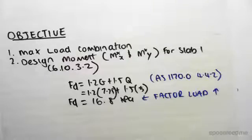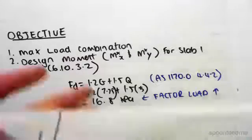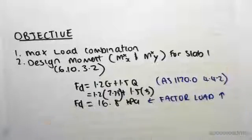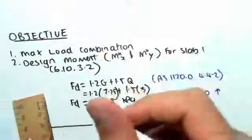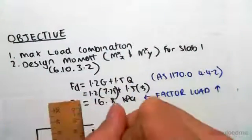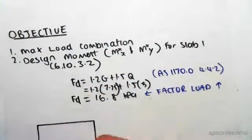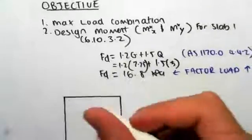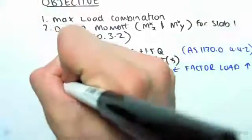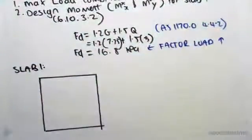Now to do the next part of this, we need to look at the slabs of interest. So we're first going to be designing for slab number one. So slab number one, I'm just going to draw it over here. So we have slab one.